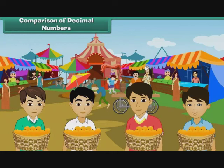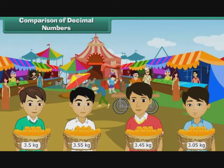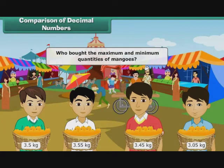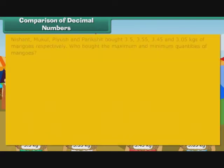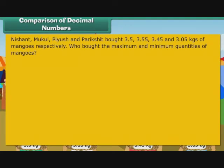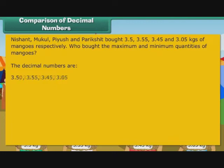Nishant, Mukul, Piyush and Parikshit bought 3.5, 3.55, 3.45 and 3.05 kgs of mangoes respectively. Who bought the maximum and minimum quantities of mangoes? Let us first arrange the decimal quantities in descending order, that is the decreasing order of values. The decimal numbers are 3.5, 3.55, 3.45, 3.05. Let us rewrite the numbers so that all of them have the same number of digits after the decimal point.